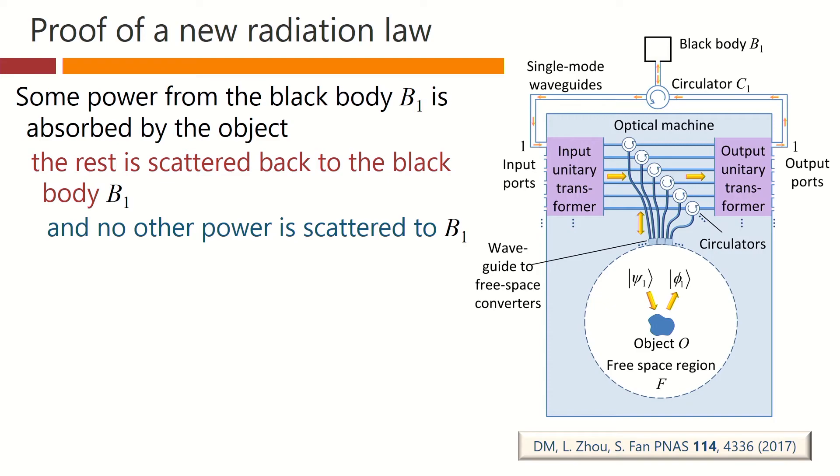And no other power is scattered to the black body. Even if we put power in these other waveguides, it will be in different input modes, modes that are orthogonal to this particular one here. And any scattered light from those will also be orthogonal to this output mode. So none of that scattered light from any other input modes will be scattered back into the black body.